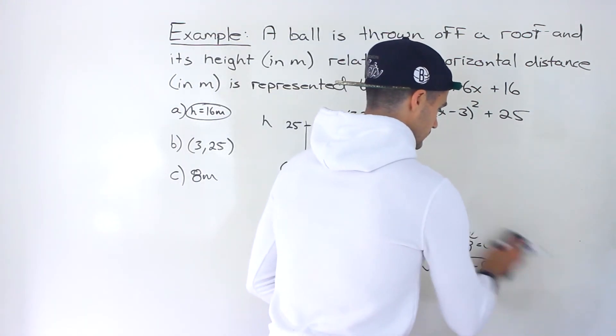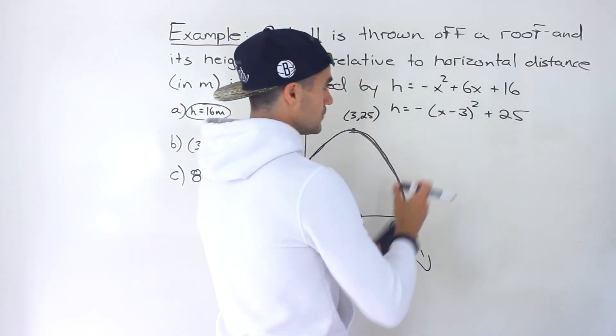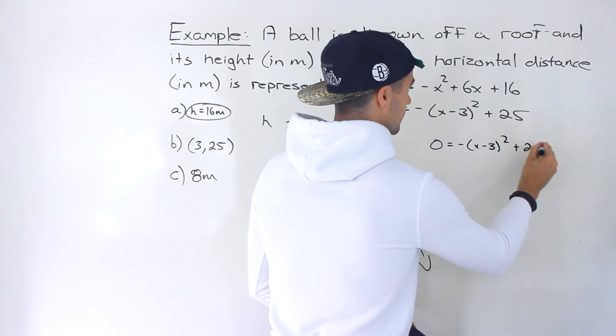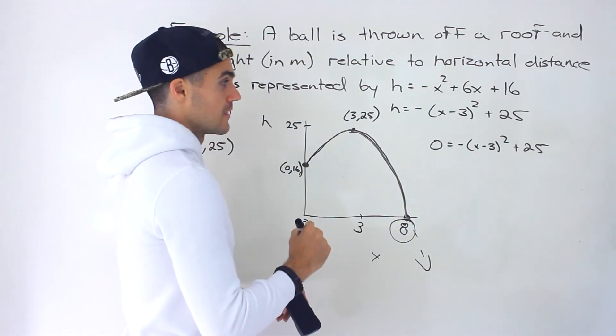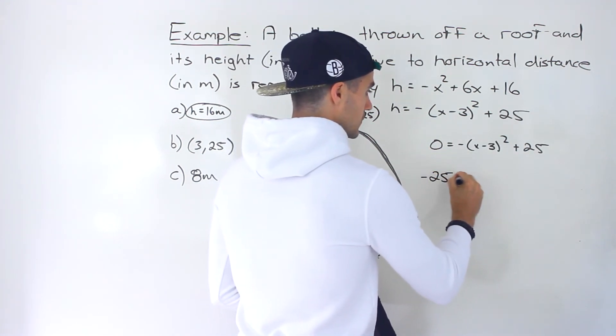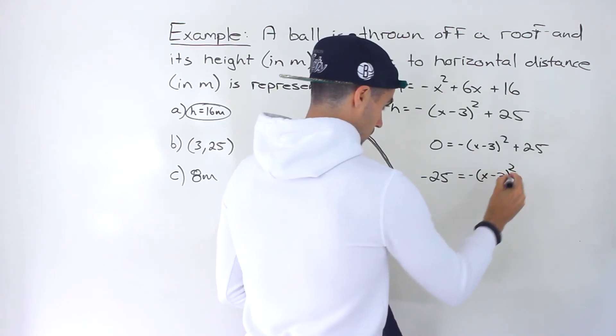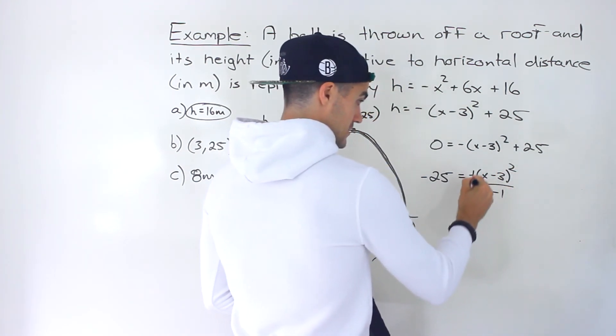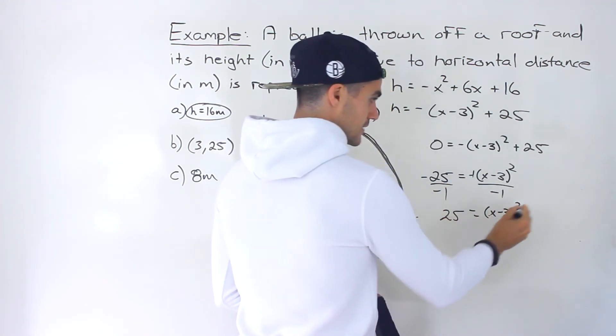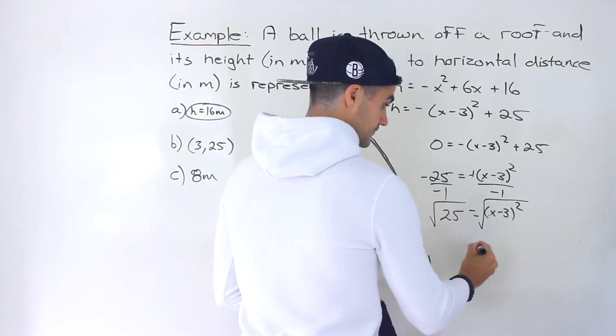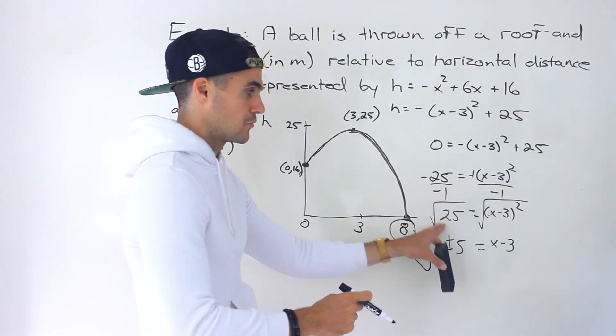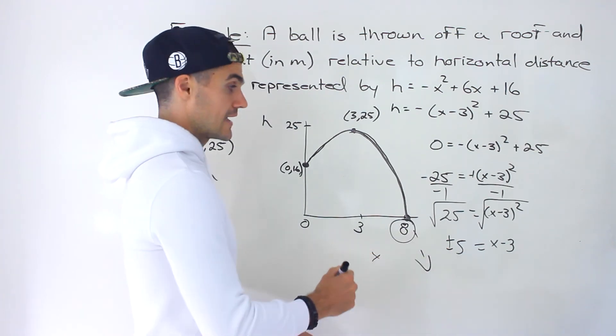You could also, though, this is not as popular of a method, but we can make the vertex form equal to 0, and then solve for x that way. And so what we would do here, bring the 25 over, so it'd be -25, and then we'd have -(x - 3)². Divide both sides by -1. There's like a -1 in front here. So we'd have positive 25. Then to get rid of this exponent, square root both sides, and we'd end up with x - 3 = ±5. Remember, the square root of something, square root of a positive number, it's always going to be plus or minus. And so there's two cases here.